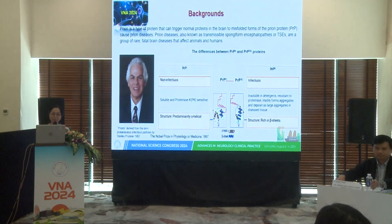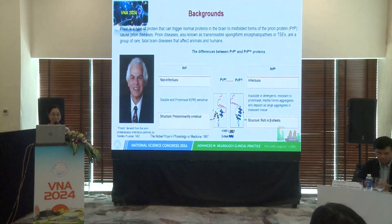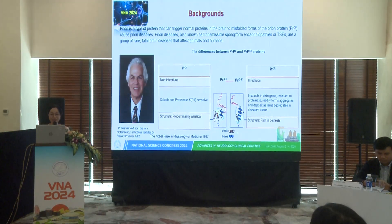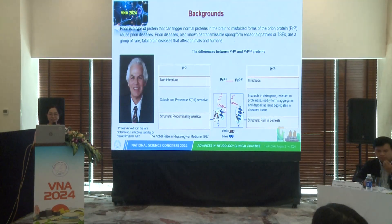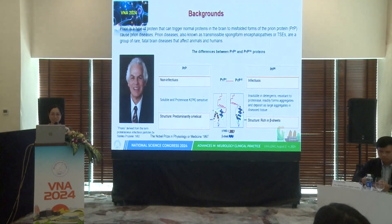PrPC is non-infectious, soluble, and proteinase-sensitive, with a structure that is predominantly alpha-helical. PrPSc is infectious, insoluble in detergents, resistant to proteinase, readily forms aggregates and deposits as large aggregates in the CNS tissue. Its structure is rich in beta-sheet.